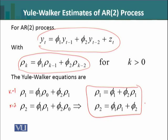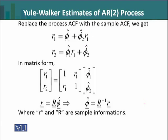So what do we do? In Yule-Walker equations, we will replace the process autocorrelations by the corresponding sample autocorrelations. This gives us a set of equations for our data which has sample autocorrelations and phi 1 and phi 2 parameters.